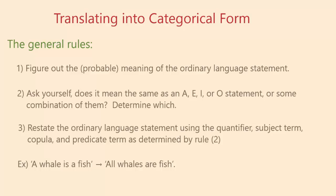Then you just restate the ordinary language statement using the quantifier, subject term, copula, and predicate term as determined by rule two. If it has the same meaning as an A statement, use the quantifier 'all.' If it has the same meaning as an O statement, use the quantifier 'some' and the copula 'are not.' As an example, if somebody says 'a whale is a fish,' they don't mean 'some whales are fish.' They mean anything that is a whale is going to be a fish, so that's going to have the same meaning as 'all whales are fish.' That's what that person is trying to convey.